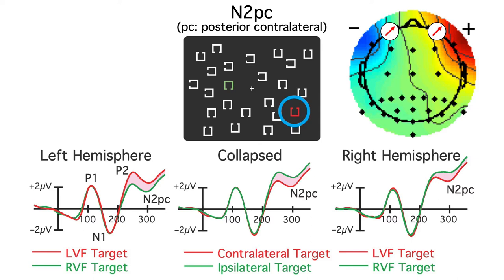So moving the eyes toward the target produces a contralateral negativity, just like the N2PC. We have to be really careful to rule out these kinds of artifacts in studies looking at lateralized components like the N2PC, contralateral delay activity, and the lateralized readiness potential.